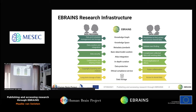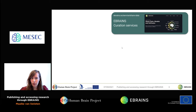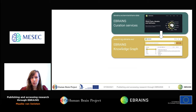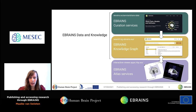Within eBrains, we have a number of different services. The eBrains curation services support you when you want to share your data, software, or a model. We have the eBrains knowledge graph, which allows you to discover and access research through eBrains. And we have the eBrains Atlas services, which provide an interactive Atlas viewer for human, mouse, and rat brains. Most importantly, the knowledge graph and the interactive Atlas viewer are tightly connected. In this session, I'll mostly focus on the find and share services of eBrains.